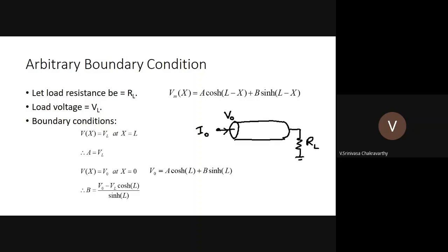Remember that the only input information given is I_0 and the cable parameters like R_∞ and length. Both V_0 and V_L have to be calculated further; we are just treating them as intermediate variables for now.